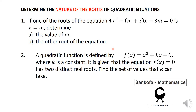The second question: a quadratic function is defined by f(x) = x² + kx + 9, where k is a constant, and it is given that the equation f(x) = 0 has two distinct real roots. Find the set of values that k can take.